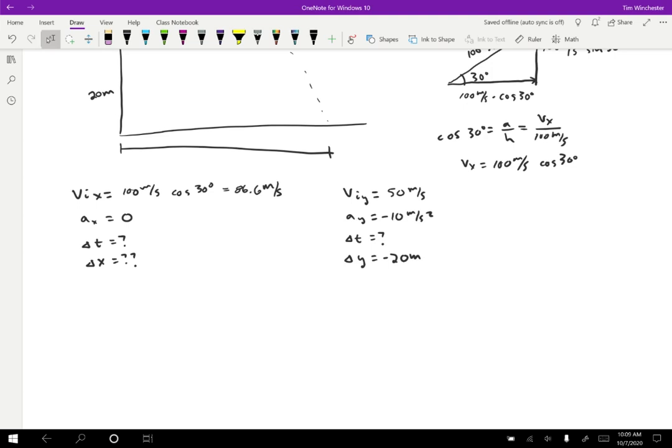So we want to then solve for delta T. Well, we do have an equation that has initial velocity, acceleration, and delta Y in it. That's going to look like this. Delta Y equals one half AY delta T squared plus the initial velocity in the Y direction times delta T. So if we start plugging things in, we have negative 20 meters on the left equals one half times negative 10 meters per second squared times delta T squared plus 50 meters per second times delta T.